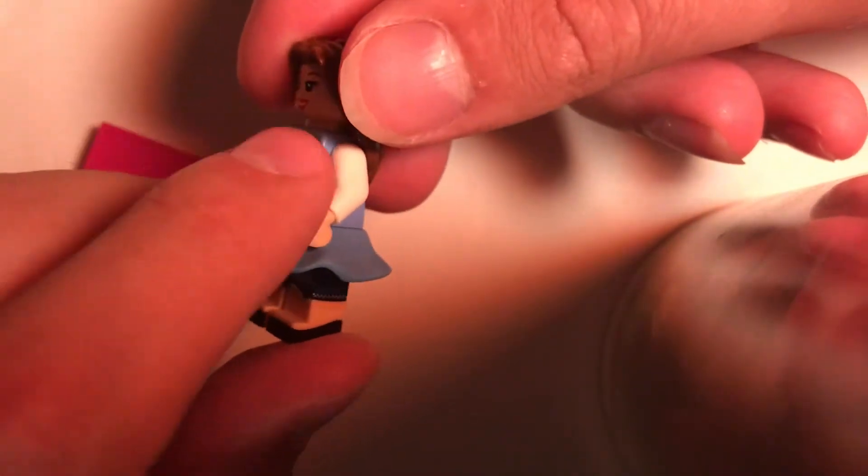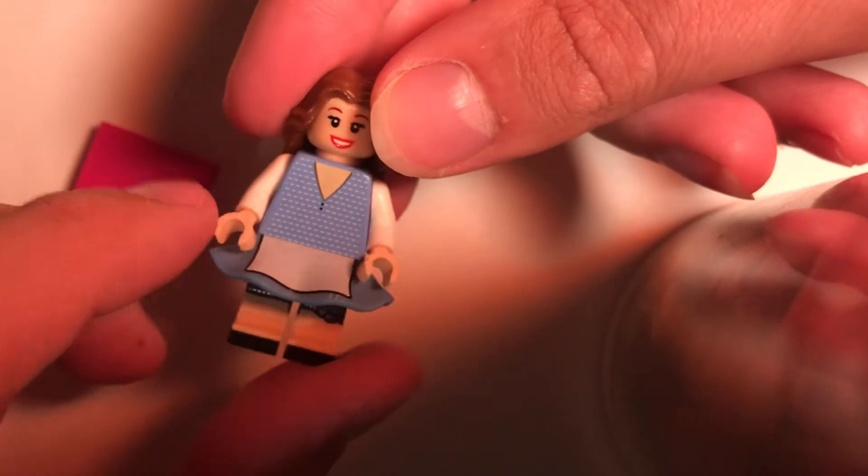I did swap out the arms for this Mary Jane torso. I made them white instead of light blue, which it came with, and I gave her tan hands.